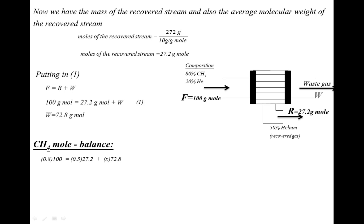We have one equation and one unknown, so we solve: 0.8 × 100 = 80, and 0.5 × 27.2 = 13.6. So 80 = 13.6 + X × 72.8. Rearranging: X × 72.8 = 80 − 13.6 = 66.4. Therefore X = 66.4 / 72.8 = 0.912. This is the methane mole fraction in the waste stream.